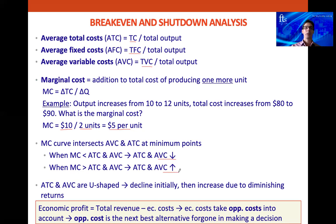We're going to look at the diagrams on the next slide. We'll also see that the average total cost and average variable cost curves are U-shaped — they decline initially, which is good news as costs go down while output goes up, but then they start increasing due to diminishing returns.